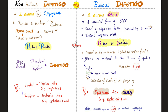Now for the comparison between the two. Non-bullous can be caused by staph or strep, but bullous is staph only. Non-bullous presents with papules and pustules, but bullous impetigo presents with bullae and blisters. Non-bullous treatment could be topical or systemic, but bullous requires systemic only.